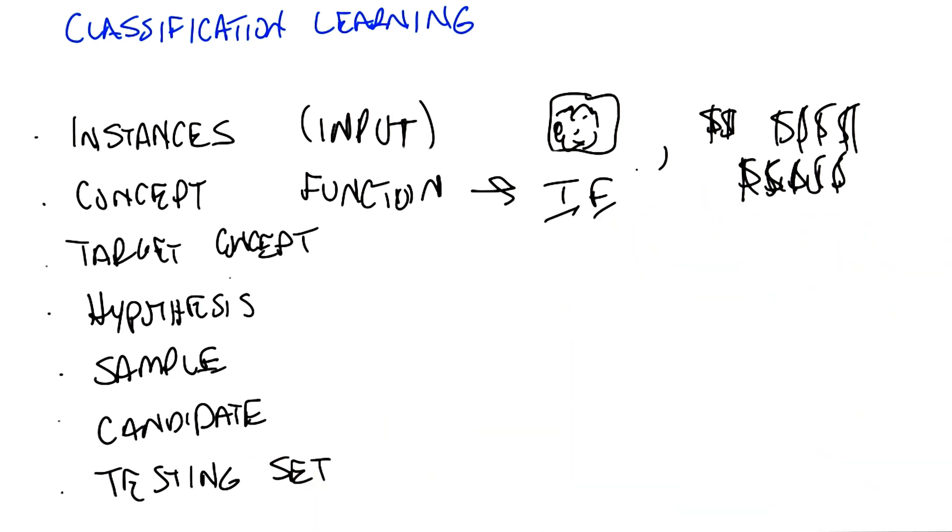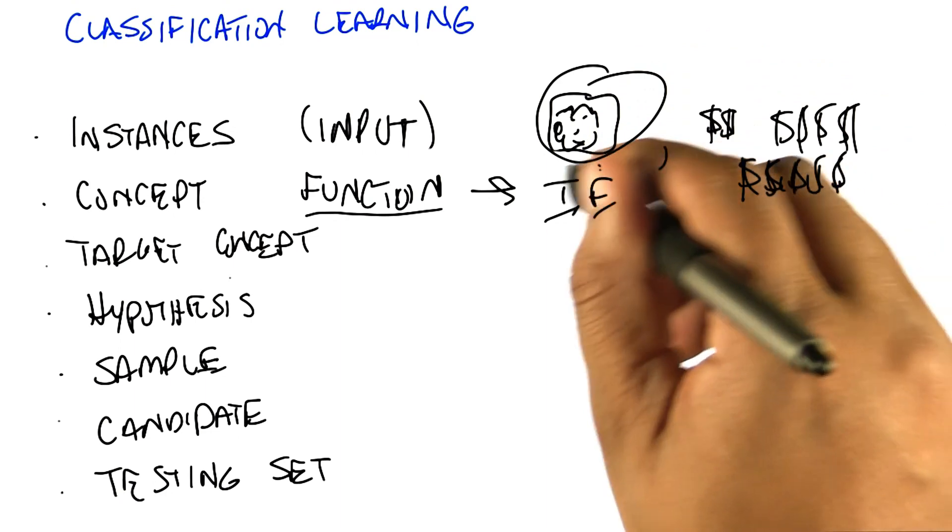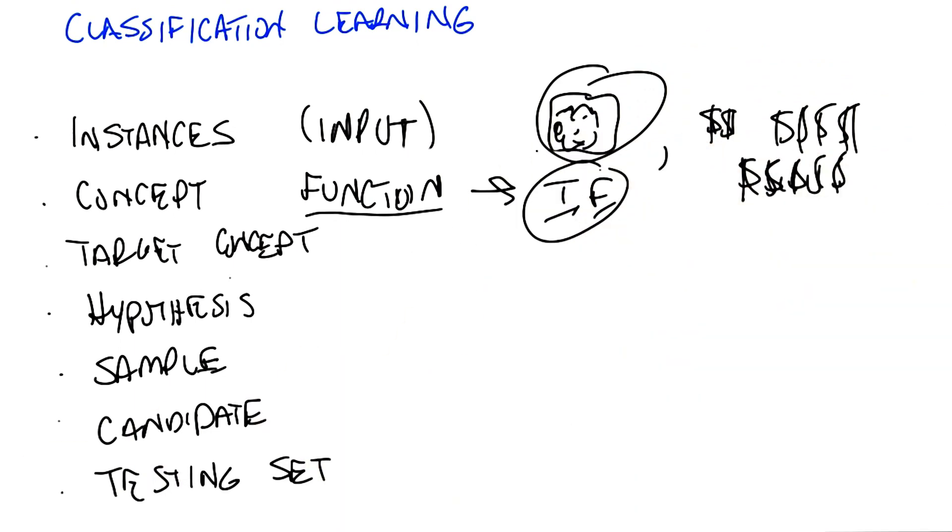But the truth is this would work whether there were three outputs as we did with high school, college, or grad school, or whether there were 250 as we were contemplating for ages. But the main thing here is the concept is the function that we care about that's going to map pictures, for example, to true or false.